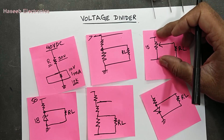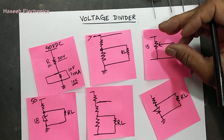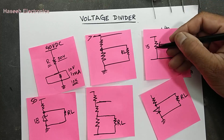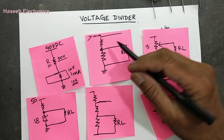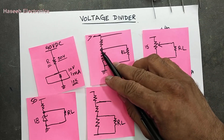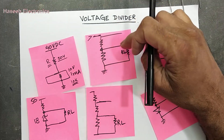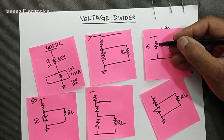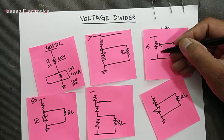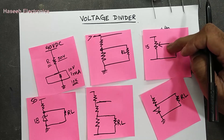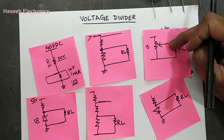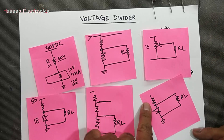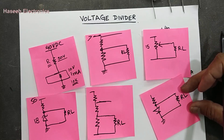We use a volume knob in a tape recorder — what are we doing inside? We are adjusting the voltage, tapping the voltage, and changing the ratio between the two resistance sections. If we use two fixed resistors, we get a fixed ratio and fixed output voltage. If we use a potentiometer — variable resistance — we get variable voltage depending on how much the slider moves toward the positive or negative side, determining the voltage level.